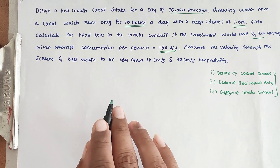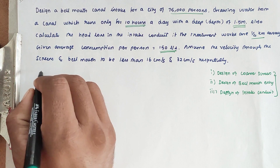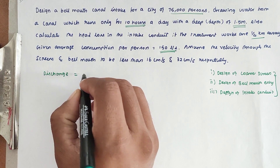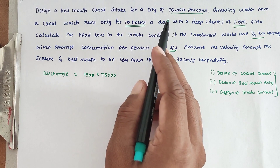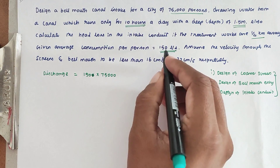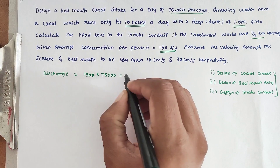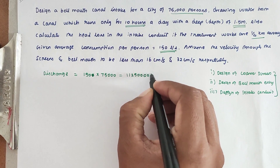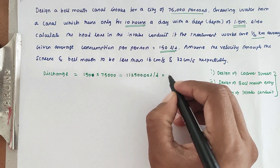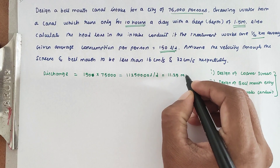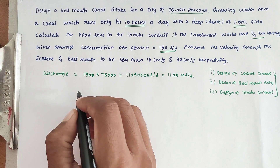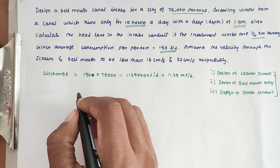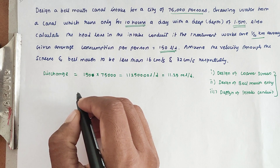First we have to find out the discharge. Discharge required equals population multiplied by daily demand. That is 150 liters per day multiplied by 75,000 population, which gives 11,250,000 liters per day, or 11.25 million liters per day. Next we convert for only 10 hours of running time into meter cube per second.